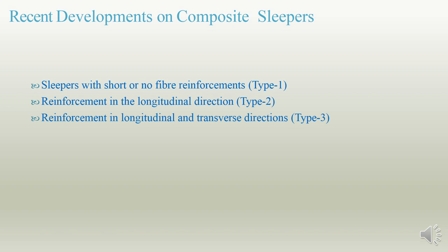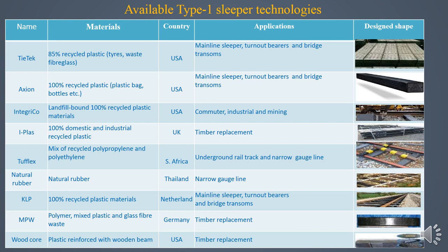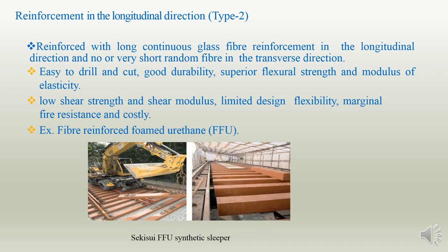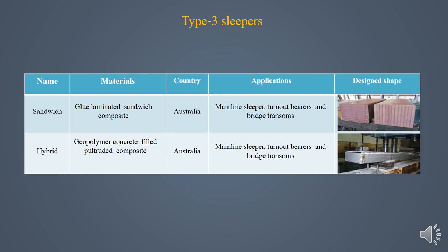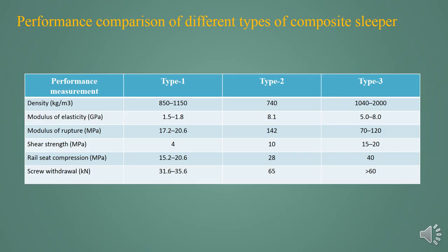Now, the recent developments in composite slippers. Slippers with no short fiber reinforcement are Type 1, then Type 2 and Type 3. Some available Type 1 slipper technologies come from USA, UK, Thailand, South Africa, and others. Type 2 has reinforcement in the longitudinal direction, with low shear strength and shear modulus, limited design flexibility, marginal fire resistance, and is also costly. Type 3 slippers are mainly developed in Australia. From the comparison table of different composite slipper types, Type 3 would be more suitable over Type 1 and Type 2, but with a higher cost.